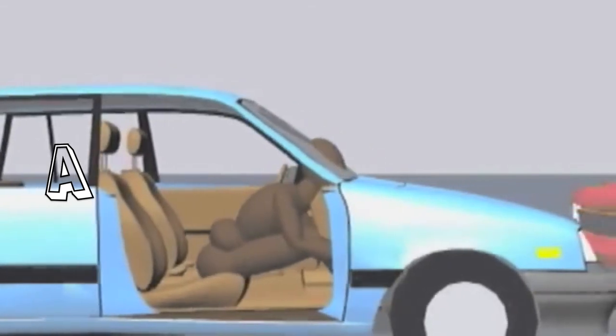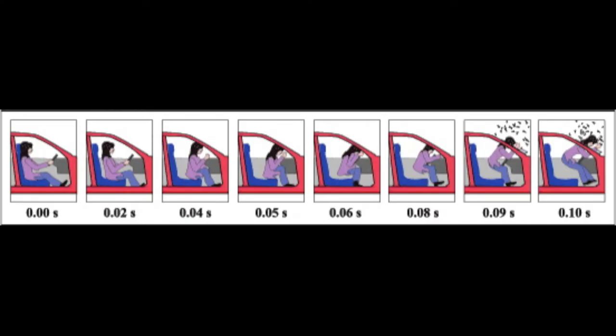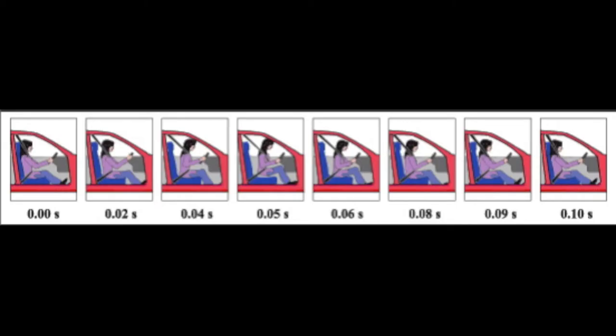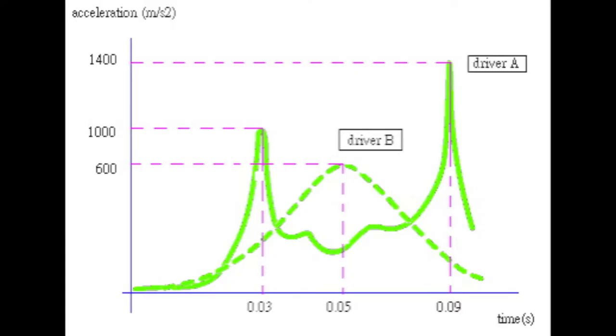Driver A doesn't have a seatbelt. Driver B does. The maximum acceleration of driver A is higher than driver B.